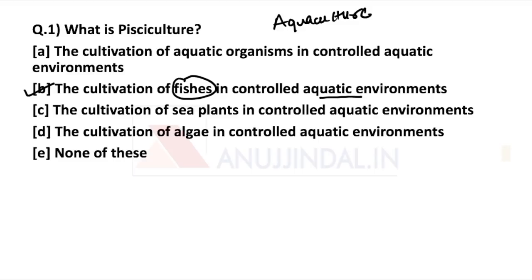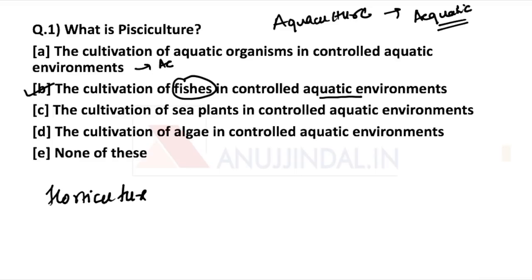Aquaculture deals with the cultivation of aquatic organisms. It is also known as aqua farming and deals with aquatic organisms cultivation broadly. Another very well-known culture is horticulture, which deals with garden culture and includes fruits and vegetables.